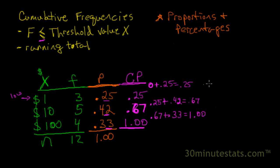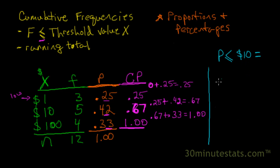We can ask the same kinds of questions that we asked when we had cumulative frequencies. For example, what proportion of the sample was worth less than or equal to $10? We look at the $10 category and come across to our cumulative proportion column, and we can see that's 0.67. So the proportion of goods sold that cost $10 or less was 0.67.